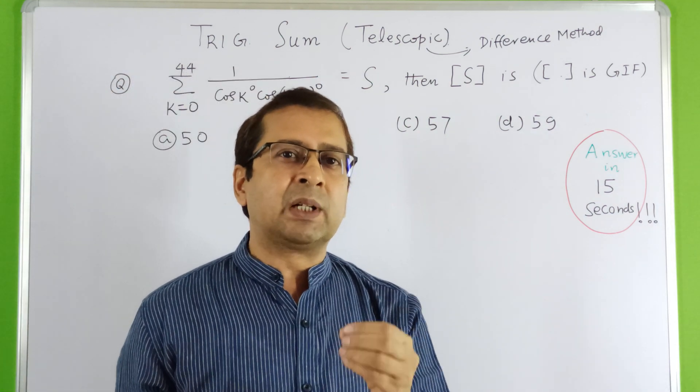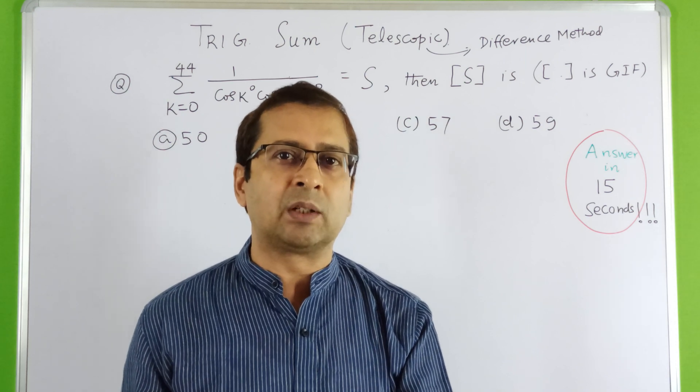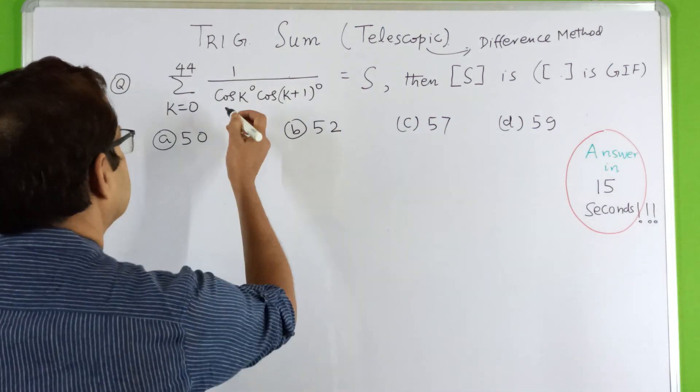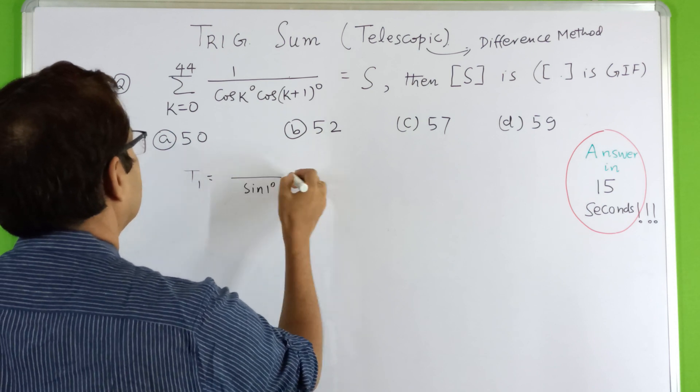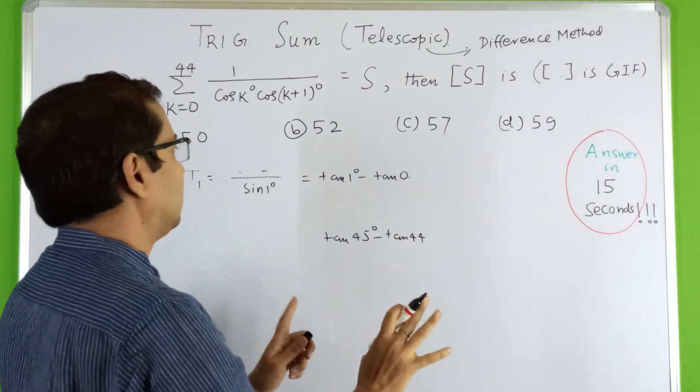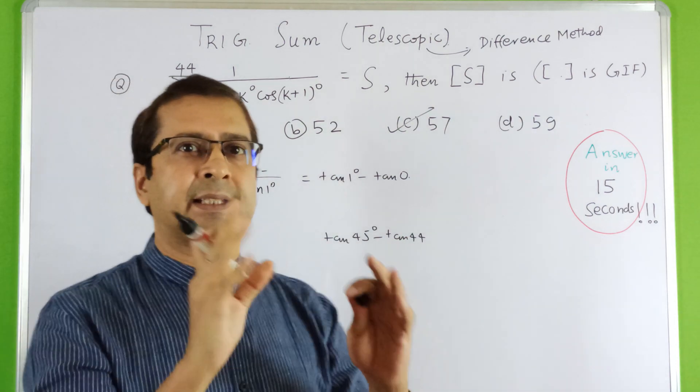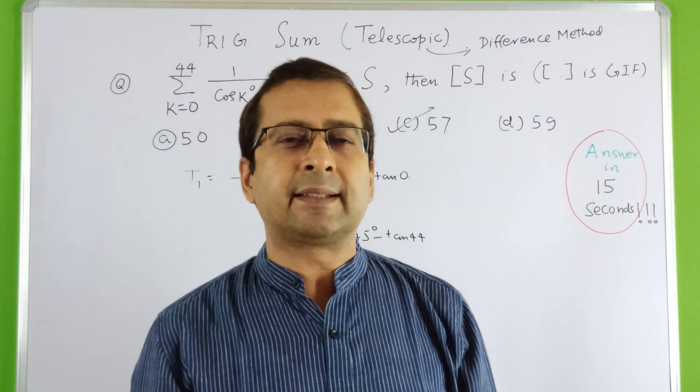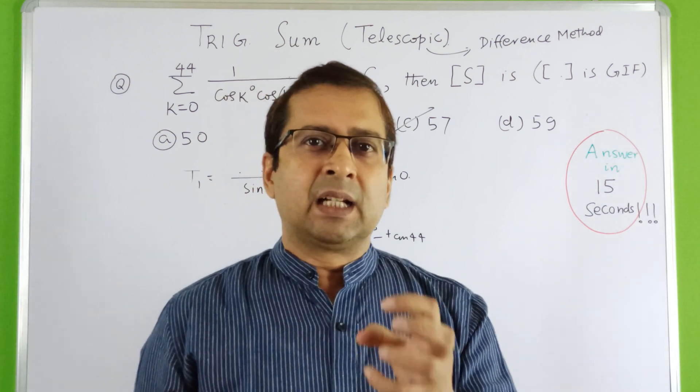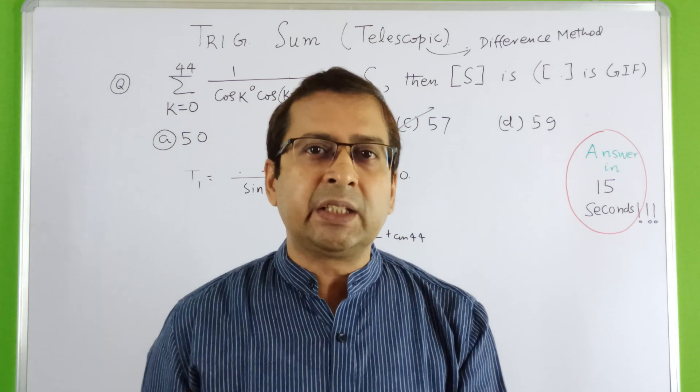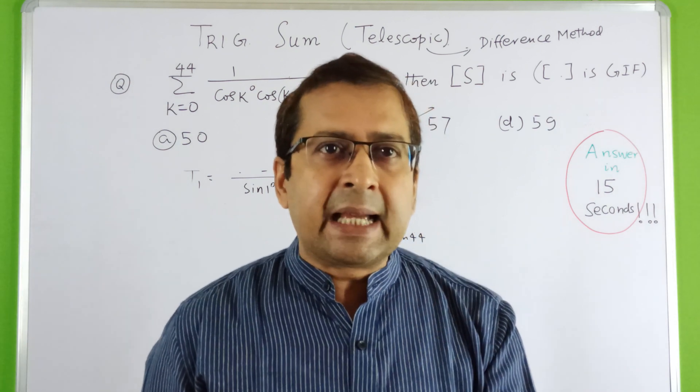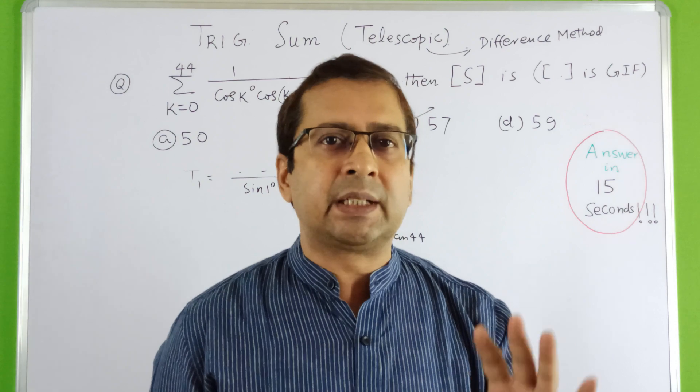S is sum, then greatest integer of S, this square bracket represents GIF, is we have four options: 50, 52, 57, and 59. This problem looks somewhat complicated but there is one concept behind it. The answer is 57, this is the guess I am making and this is correct answer. Now look at the explanation I am going to give you.